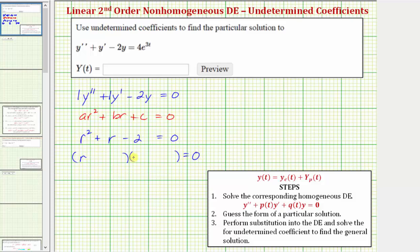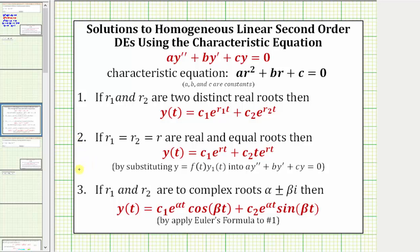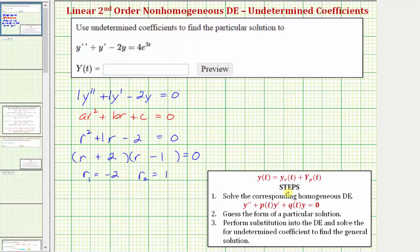So we have r squared plus r minus two equals zero. Factoring: factors of r squared are r and r, and the factors of negative two that add to positive one are positive two and negative one. We have two distinct real solutions: r sub one equals negative two and r sub two equals positive one. Because the characteristic equation has two distinct real roots, the complementary function is y sub c of t equals c sub one times e to the negative two t plus c sub two times e to the t.